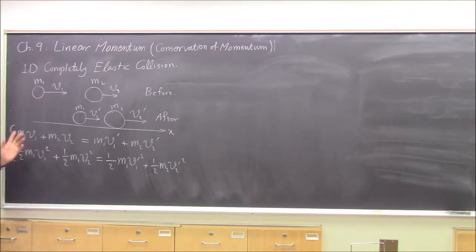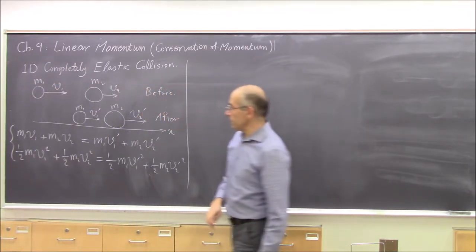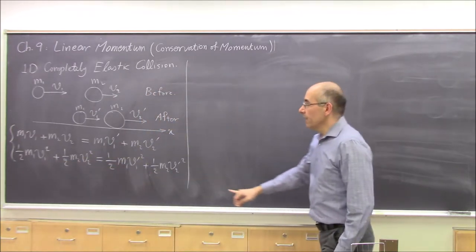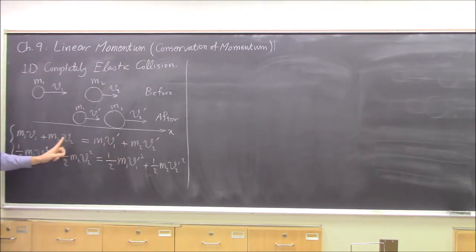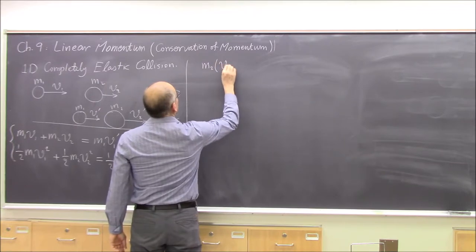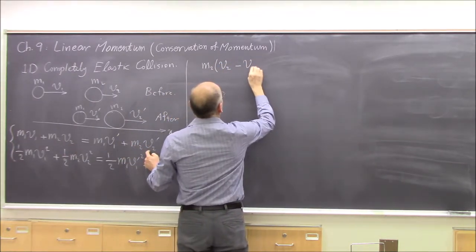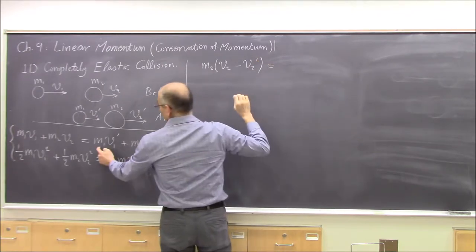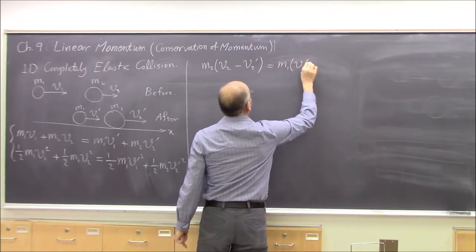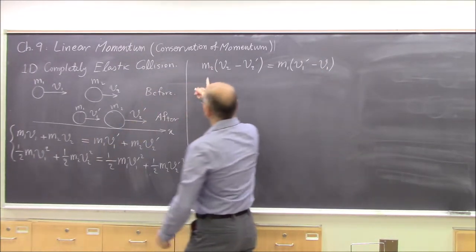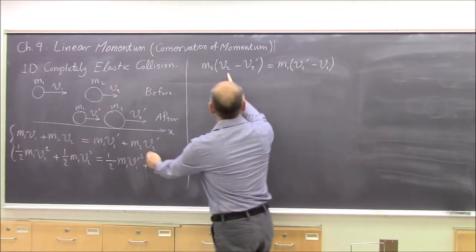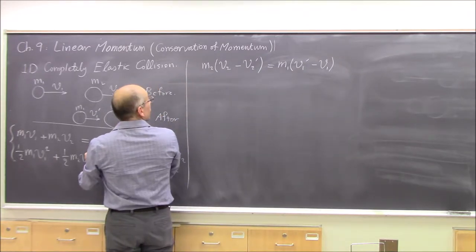There are different techniques, but with a little trick it becomes very simple. The one-half terms cancel in the energy equation. Then rearrange by moving M1 terms to one side and M2 terms to the other. We get M2(V2 minus V2 prime) equals M1(V1 prime minus V1) from the momentum equation, and M2(V2 squared minus V2 prime squared) equals M1(V1 prime squared minus V1 squared) from the energy equation.